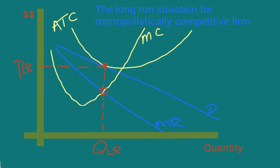Now, notice at that price, the average total cost curve touches the demand curve, the price curve. So price is the same as average total cost. So that means that economic profits are zero.